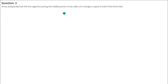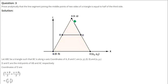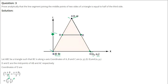Prove analytically that the line segment joining the midpoints of two sides of a triangle equals half of the third side. We place one vertex at the origin (0, 0), another on the x-axis at (x1, y1), and the third at (x, y). Let D be the midpoint of AB and E be the midpoint of AC. The coordinate of D is (x/2, y/2).